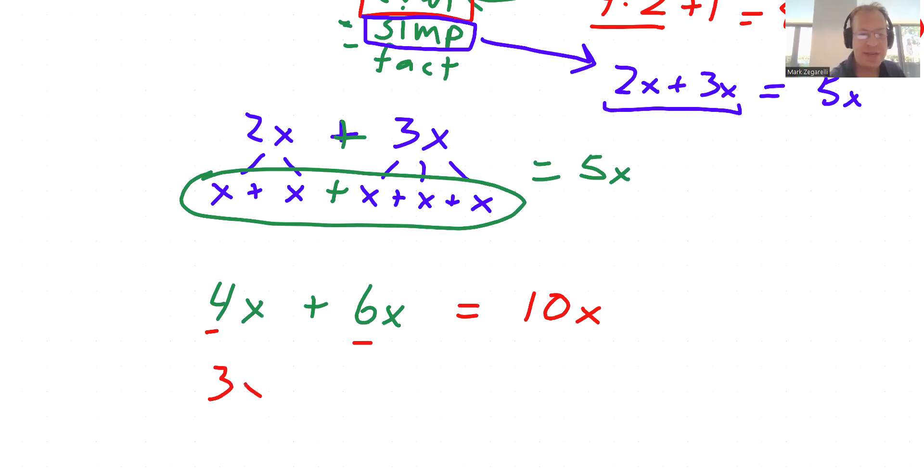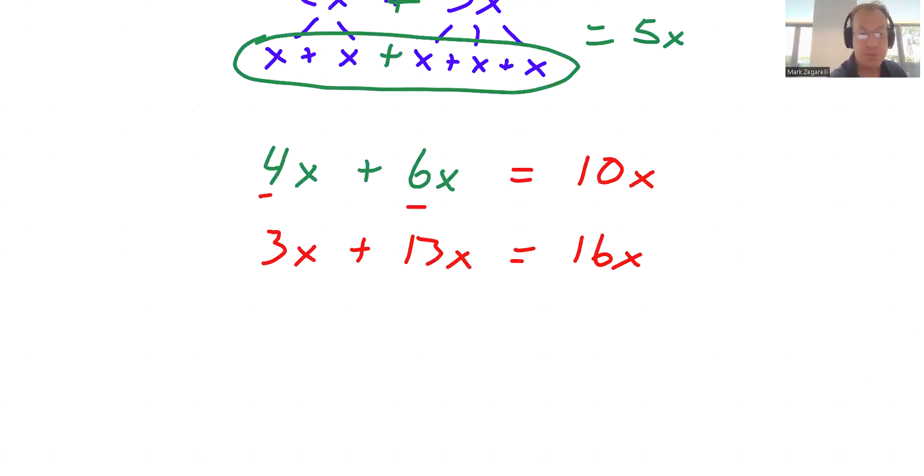3x plus 13x is 16x. We can do the same thing with subtraction. 7x minus 2x equals 5x. 100x minus 3x equals 97x.